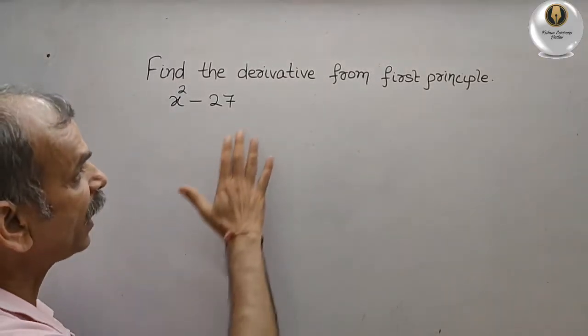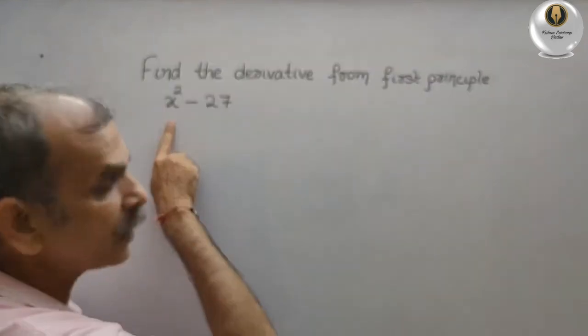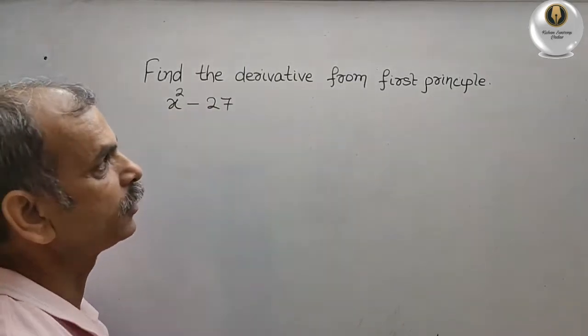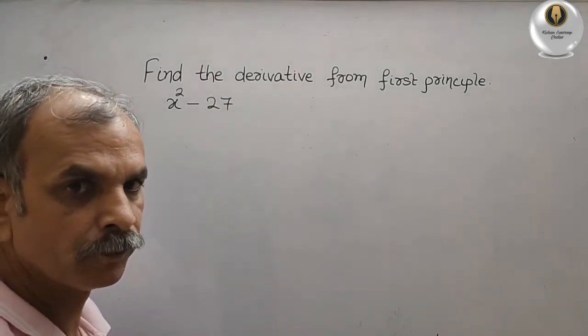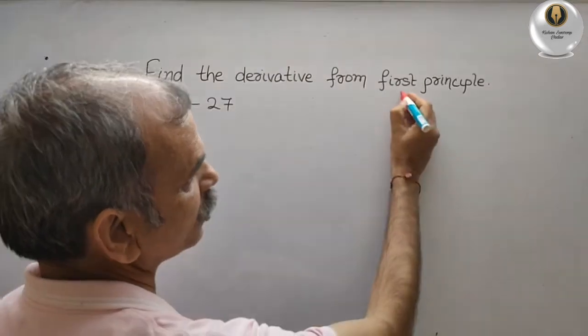Your question is find the derivative from first principle. What they have given: x squared minus 27. Now do not get confused with this first principle.